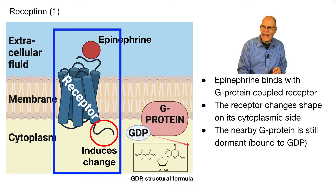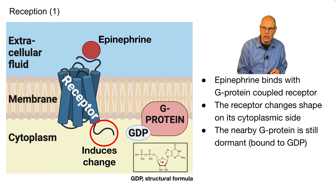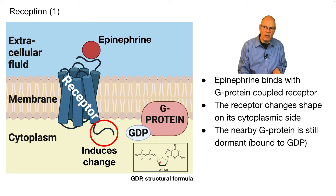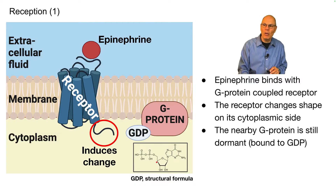Right at this moment, the nearby G protein is still dormant — it's still bound to GDP. GDP is a relative of ADP and it's the low-energy form. It can oscillate between this low-energy form and a high-energy form, and that happens when the G protein becomes activated.